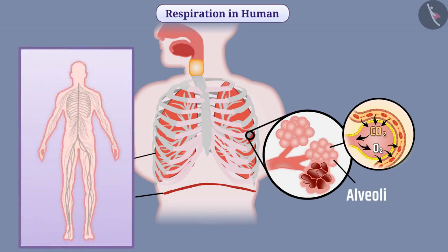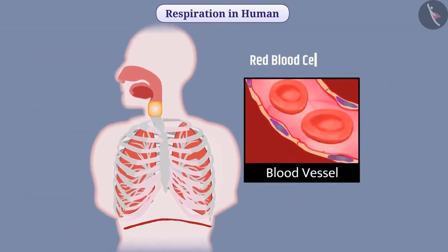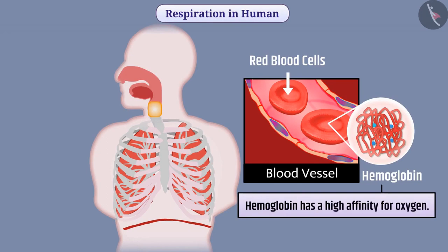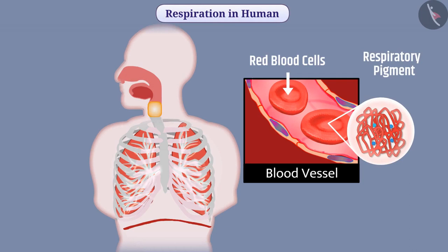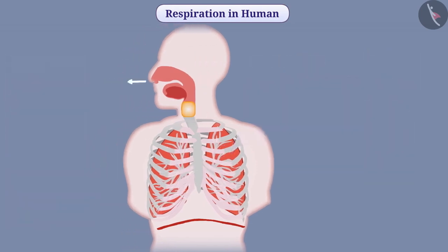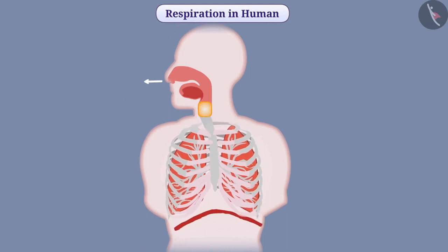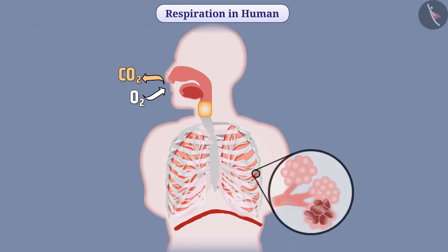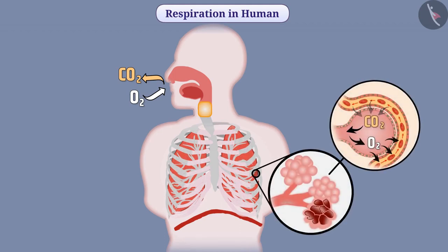The size of the human body is large, so diffusion pressure is not sufficient to carry oxygen to all tissues. Therefore, red blood cells present in the blood contain hemoglobin. Hemoglobin has a high affinity for oxygen, and this respiratory pigment takes oxygen from the air of alveoli and carries it to all tissues and each cell of the body. While exhaling, the diaphragm becomes dome-shaped, causing the ribs to come down and the chest cavity to become smaller, so air comes out of the lungs. In the process of inhaling and exhaling, a residual volume of air remains inside the lungs, allowing sufficient time for absorption of oxygen and release of carbon dioxide in the alveoli.